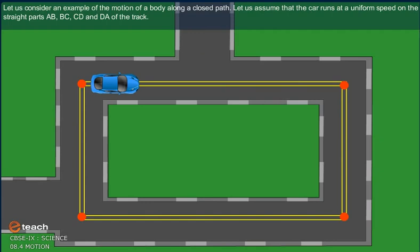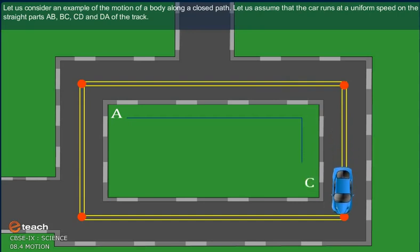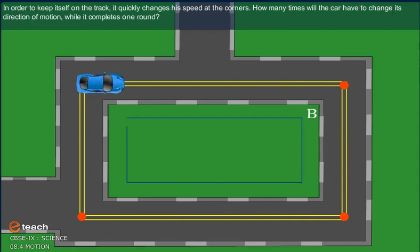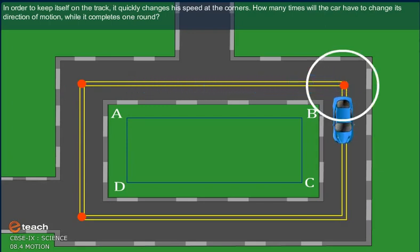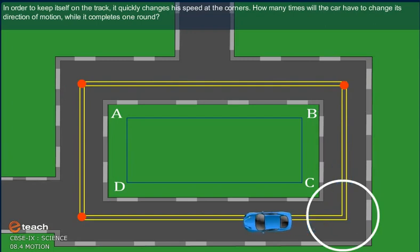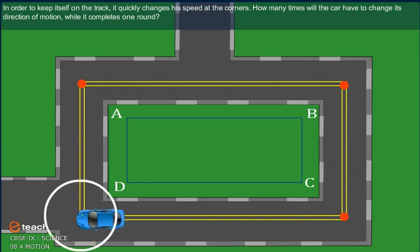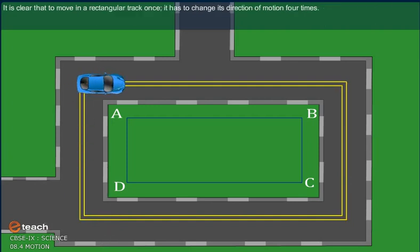Let us consider an example of the motion of a body along a closed path. Let us assume that the car runs at a uniform speed on the straight paths AB, BC, CD and DA of the track. In order to keep itself on the track, it quickly changes its speed at the corners. How many times will the car have to change its direction of motion while it completes one round? It is clear that to move in a rectangular track once, it has to change its direction of motion four times.